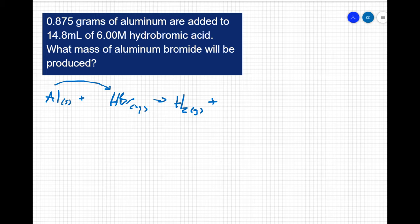For the aluminum bromide, aluminum forms a plus 3 charge as an ion, and bromine forms a minus 1 charge. So aluminum bromide is AlBr3, and if you look at your solubility rules, aluminum bromide is aqueous. It's a soluble solution.